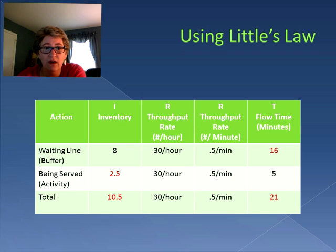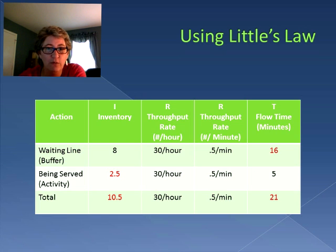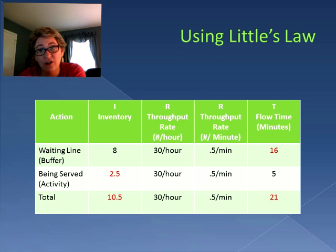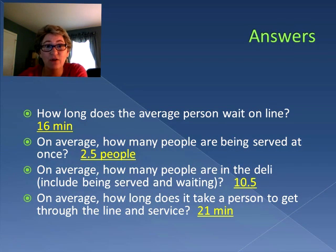For the waiting line, with inventory of eight and throughput rate of 0.5, the flow time works out to 16 minutes. For the activity of being served, the inventory is two and a half. Totaling everything up, on average there are 10 and a half people in the deli, and on average it takes 21 minutes to get through the whole line and be served.